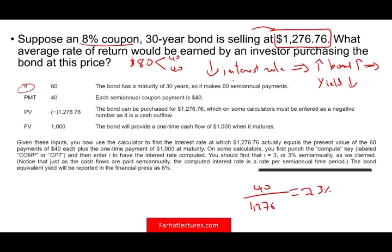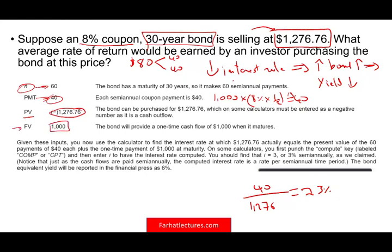You can do this using your financial calculator. Input N equal to 60 — we have 60 payments because it's a 30-year bond. The payment is $40, which is $1,000 face value times 8% times one-half. You pay negative $1,276.76 as present value, and the future value is $1,000 when the bond matures. Click compute and you'll find the interest rate is approximately 3% semi-annually — or about 6% annually. You bought a bond paying an 8% coupon, but because you paid a premium, you're effectively earning around 3% every six months.